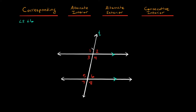So a pair of corresponding angles would be angle two and angle six. Another pair — top left here, top left here — one and five. So one and five are also corresponding angles. And same thing, three and seven are corresponding and four and eight are corresponding.